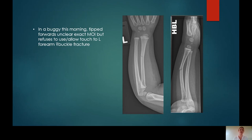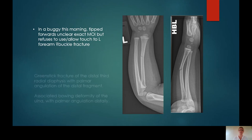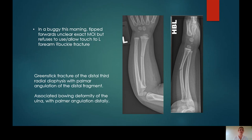Case 5: In a buggy, tipped forwards, unclear exact mechanism of injury, refuses to use or allow touch to left forearm, query buckle fracture. This is an example of a greenstick fracture of the distal third radial diaphysis, and also a bowing deformity of the ulna. If you really follow that ulnar contour of the whole bone, especially on the lateral, you'll see it actually bends — much more than it should. Another example of a subtle bowing deformity.